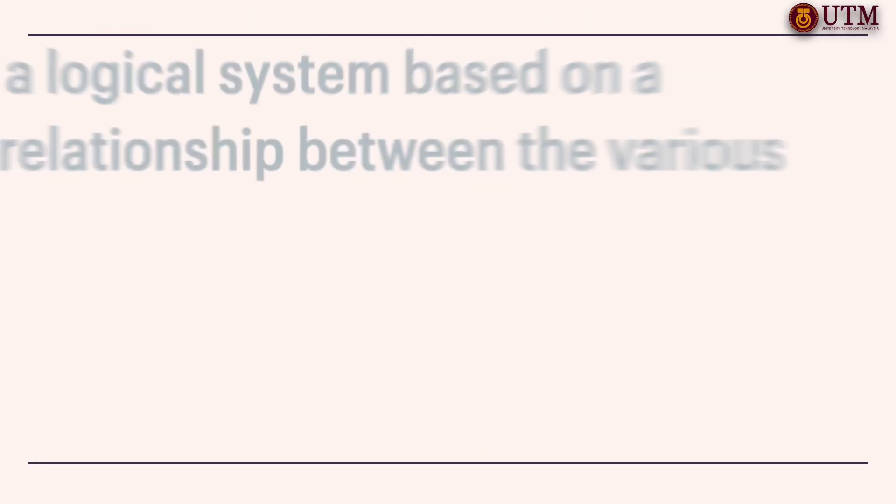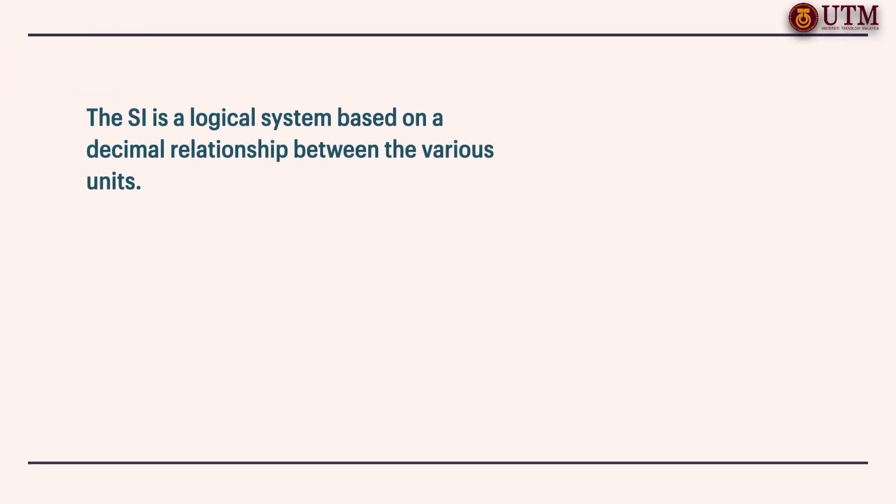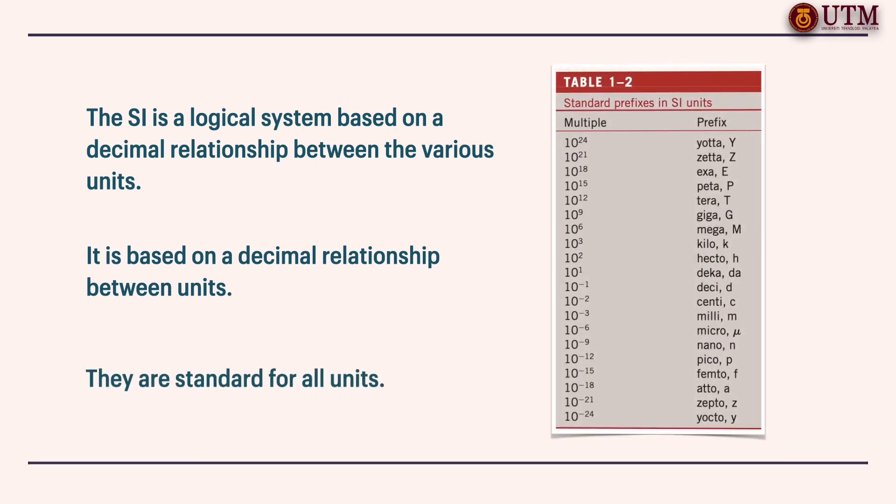The SI is a simple and logical system based on a decimal relationship between the various units and it is being used for scientific and engineering work in most of the industrialized nations, including England. The prefixes used to express the multiples of the various units are listed in table 1.2. The SI unit prefixes are used in all branches of engineering.